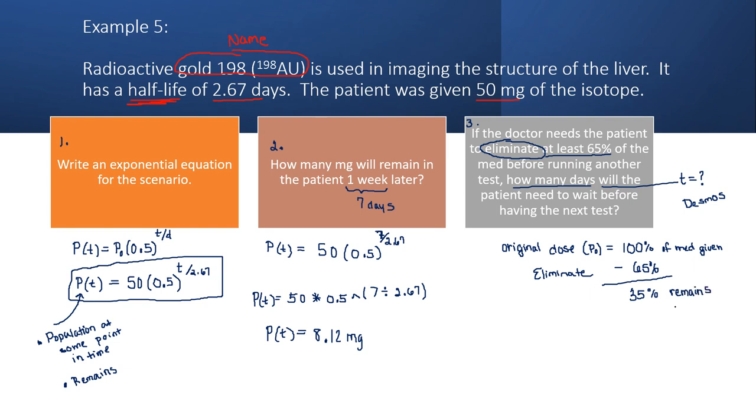So easiest way to use these numbers is to use the 100 as the P zero, and use the 35 as the P(t), because P(t) is what remains. So that gives me numbers to fill into my equation. So 35 is the percentage remaining. 100% is the percentage that was given. Our formula has a half-life, so the 0.5 for half, and the T over 2.67.